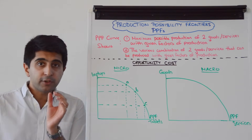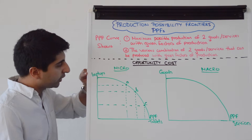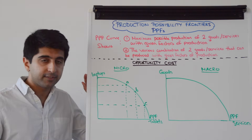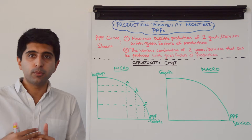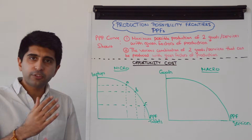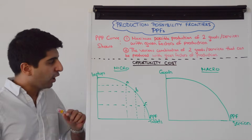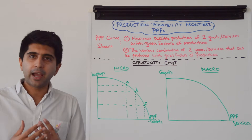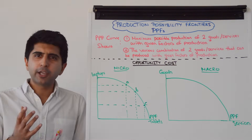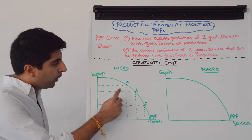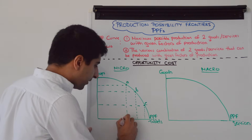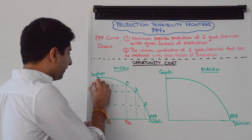Let's have a look at this micro PPF. How do we know it's micro? Because we're looking at two specific goods — in this case a firm that can produce either laptops or tablets. The curve tells us the maximum possible production of both, and the various combinations of laptops and tablets that can be produced depending on how this firm uses their factors of production.